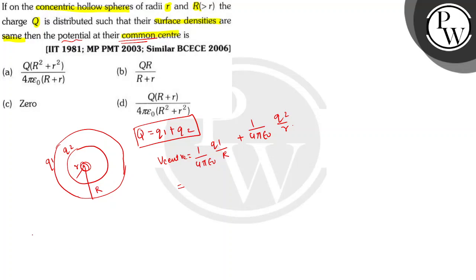Now, as we know the surface densities are same, Q equals Q1 plus Q2. So sigma equals Q upon 4π r square.